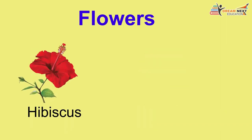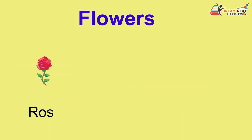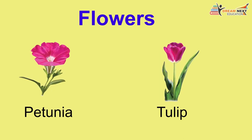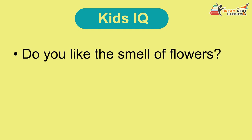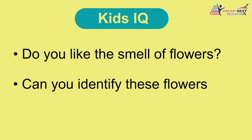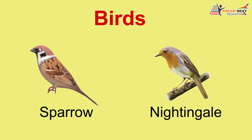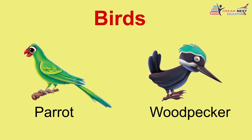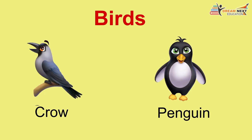Flowers: poppies, plum blossom, hibiscus, lotus, jasmine, marigold, rose, sunflower, daisy, alamanda, petunia, tulip. Kids IQ: Do you like the smell of flowers? Can you identify these flowers? Birds: sparrow, nightingale, eagle, peacock, parrot, woodpecker, pigeon, duck, crow, penguin, owl, kiwi.